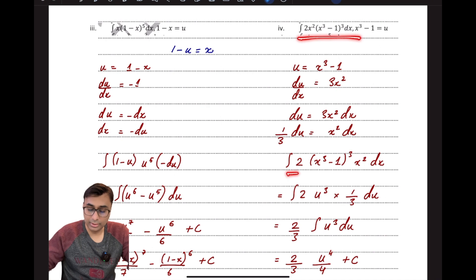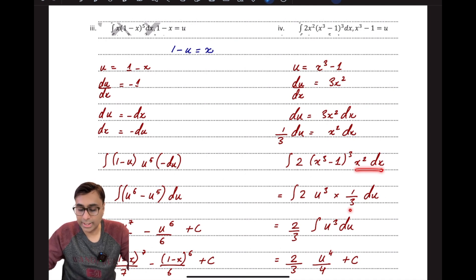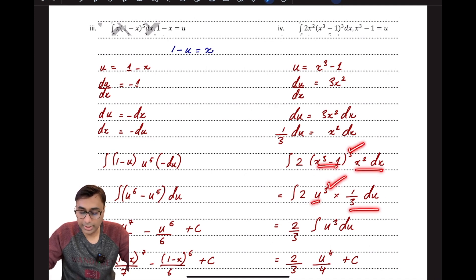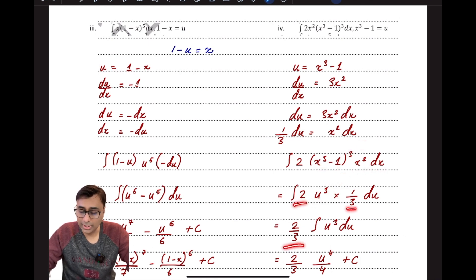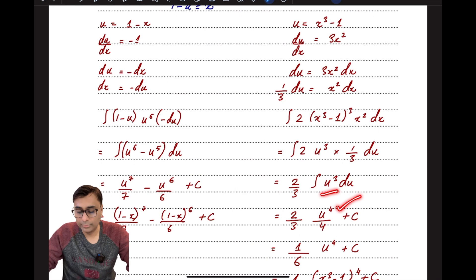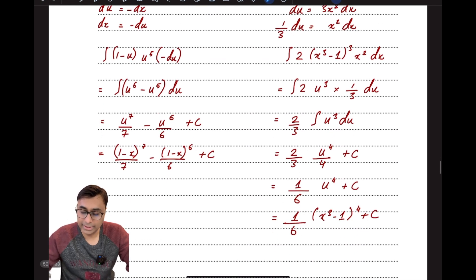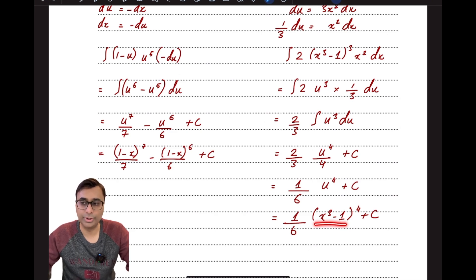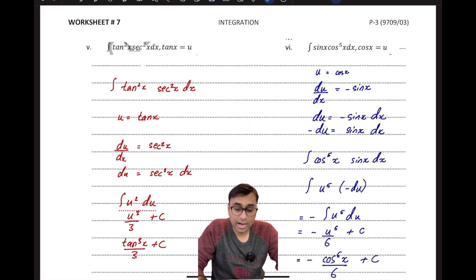I rearrange the integral, placing x² with dx to substitute as (1/3)du, and (x³ − 1) becomes u³. The constants 2 and 1/3 come out as a factor of 2/3, and the integral simplifies greatly. Applying the power formula to u³ and then replacing u with (x³ − 1) gives the final integrated result.